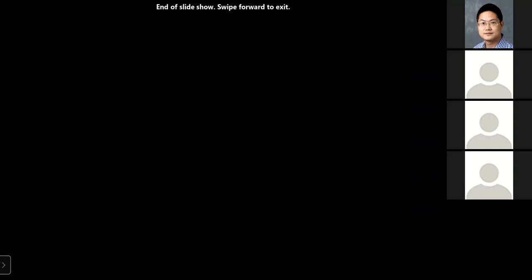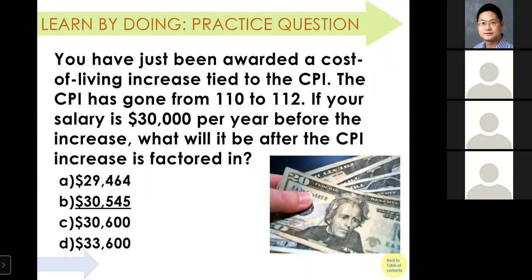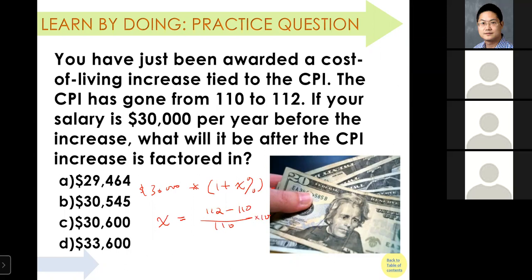Practice question: You've been awarded a cost-of-living increase tied to CPI. The CPI has gone from 110 to 112. If your salary is $30,000, what would it be after the CPI increase? Your salary of $30,000 is multiplied by (1 + x), where x is the inflation rate — the percentage change in CPI: (112 − 110) / 110 × 100. Plugging in gives the answer of option B.